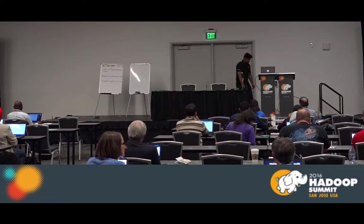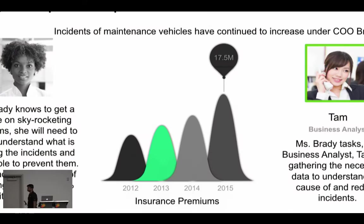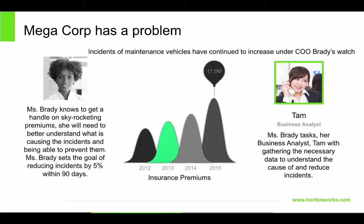To start things off, I'm going to tell you a story. The story is about a transportation company facing business problems — the same ones you'll be helping to solve today with these labs. Megacorp has a problem: the CEO, Ms. Brady, is worried they're losing a lot of money in insurance premiums. This company has trucks going around the Midwest transporting goods from one point to another, but insurance premiums are skyrocketing.